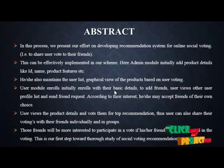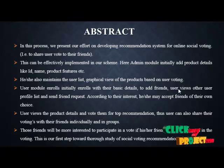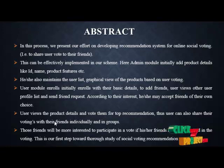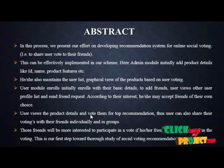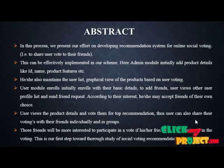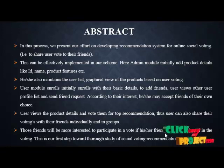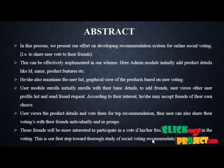The user module enrolls initially with basic details to add friends for social communication. Users can view other user profile lists and send friend requests according to their interest; they may accept friends of their own choice. Users view product details and vote on them to see a top-based recommendation — viewing the list of product details based on cost, quality, and brand. Users can also share their voting with friends individually and in groups. Friends will be more interested to participate in voting if they see their friends have participated. This is our first step toward a thorough study of social voting recommendation.